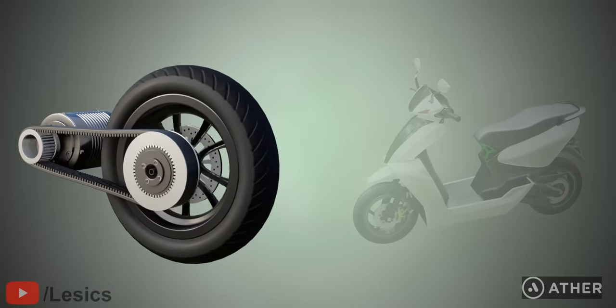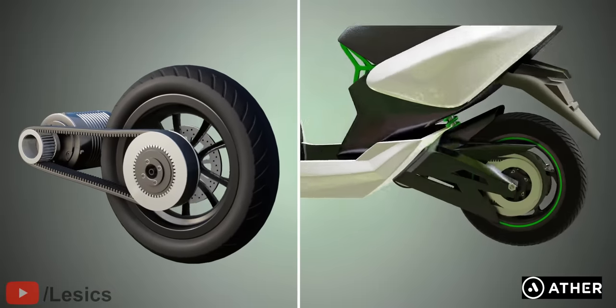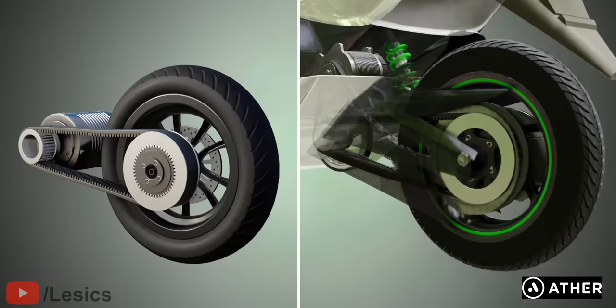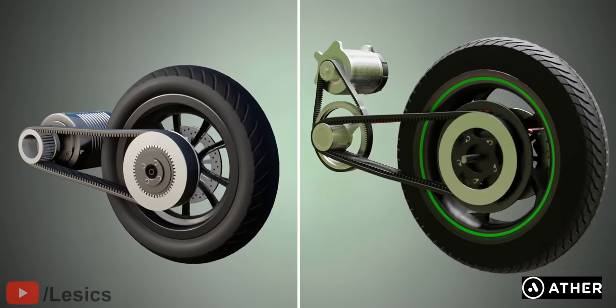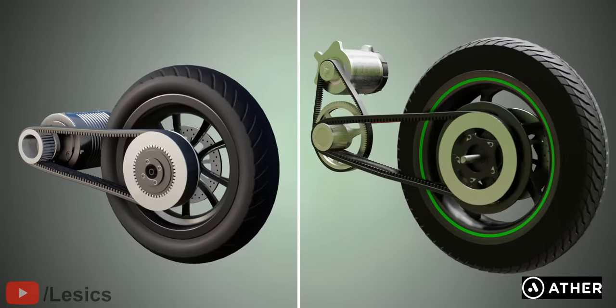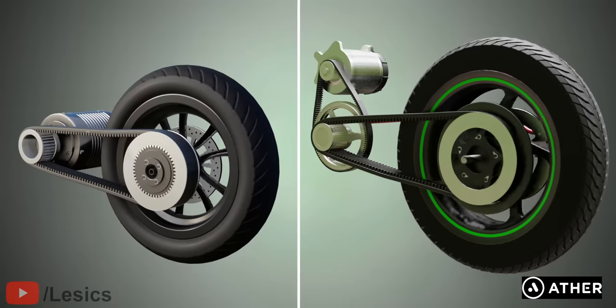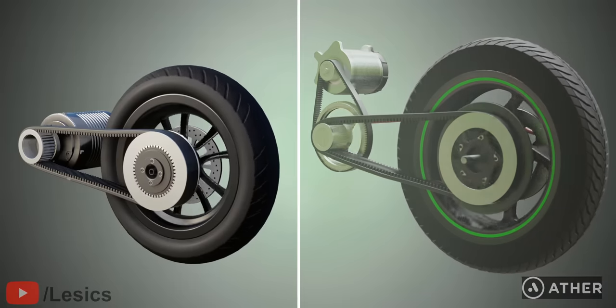Other scooters, for example Aether, use a two-stage transmission system to get high torque, so the increased number of gears results in extra noise. Ola can manage with a single-speed transmission because the IPM motor inherently gives a good torque output.